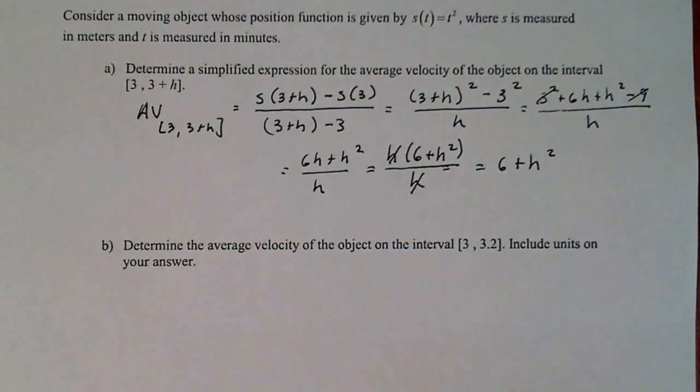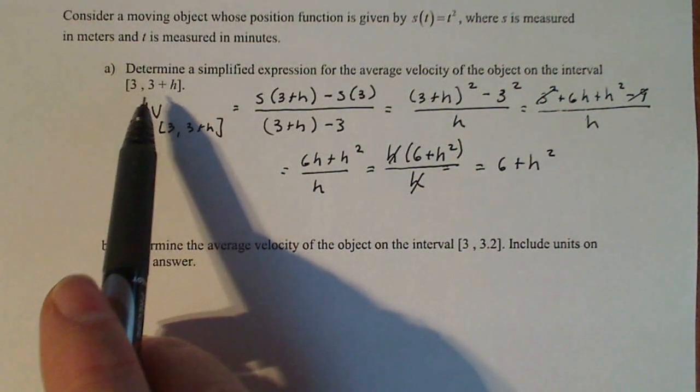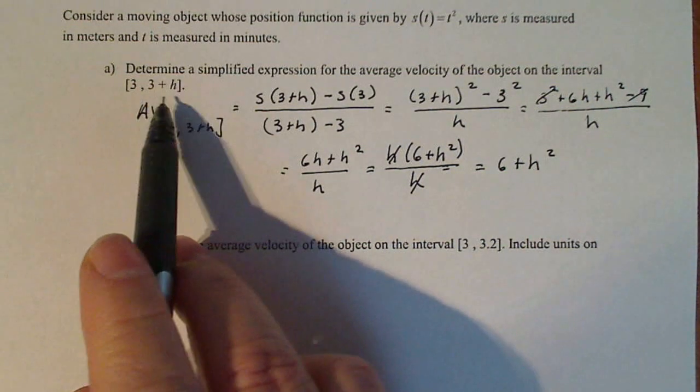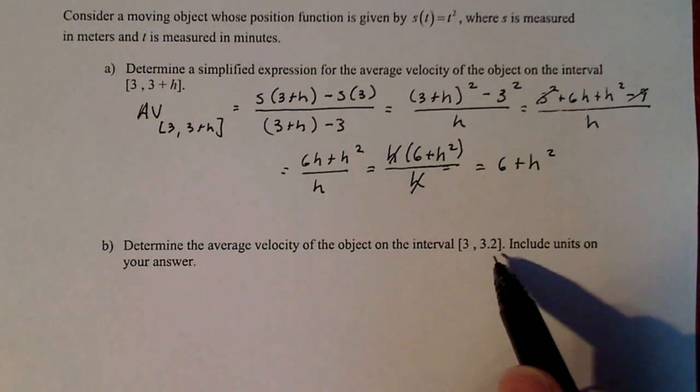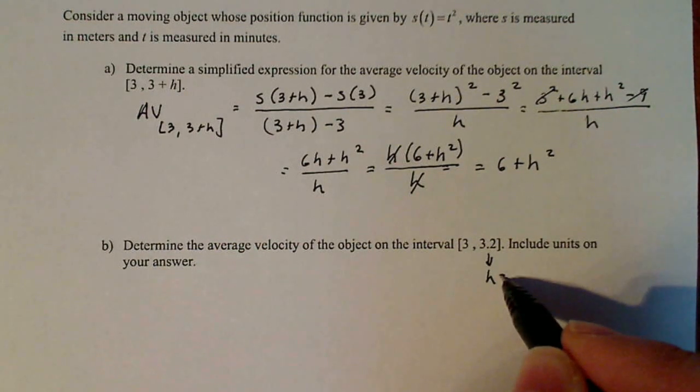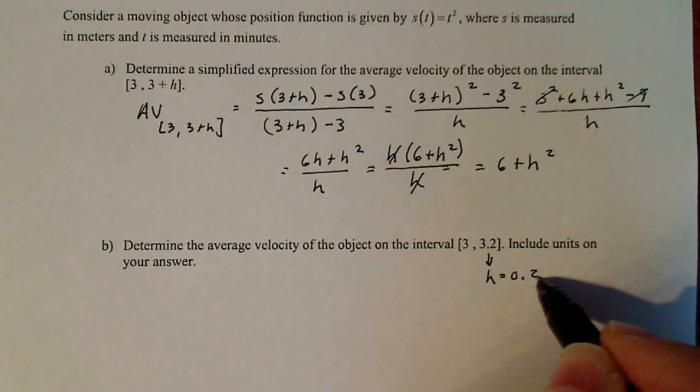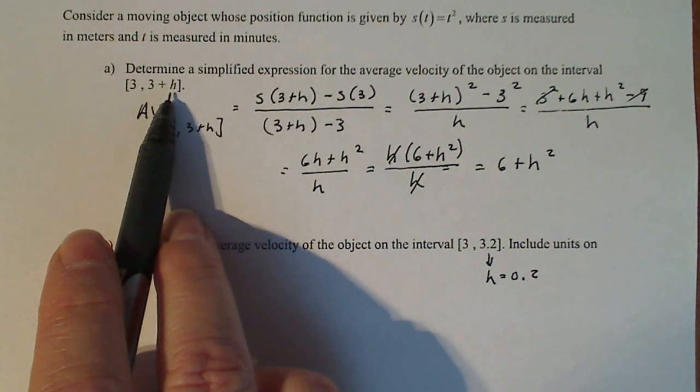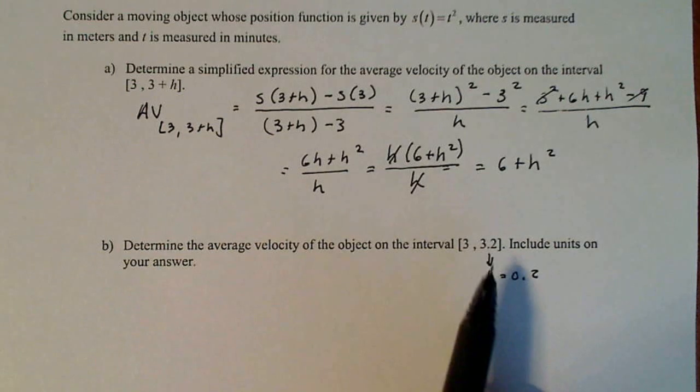Now, I'm going to actually use this to do this problem down here because I noticed that this is 3 + h and this is 3.2. So 3 to 3+h, 3 to 3.2. So this is implying here that h is equal to 0.2. Because if I take 3 + 0.2, put 0.2 in for h, I get my interval.